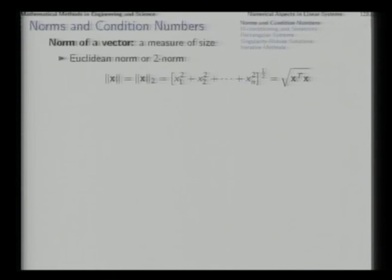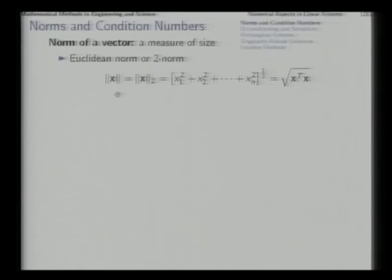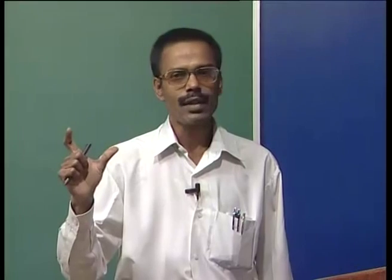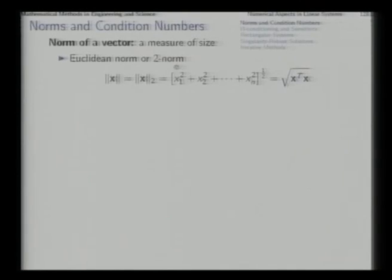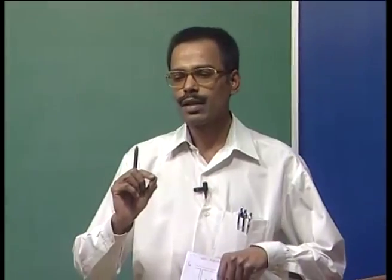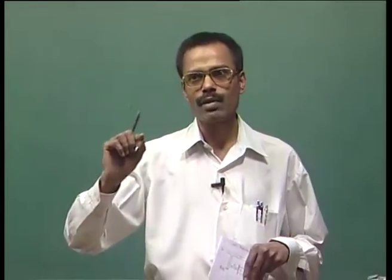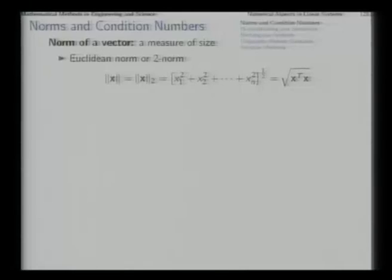The underlying definition: norm means size. When you talk of norm of a vector, we basically talk of a measure of size of the vector. All of you are familiar with the ordinary Euclidean norm or two-norm, which is simply the length of the vector x in the ordinary geometric sense. That is x₁² + x₂² + ... + xₙ² to the power half, meaning square root — the same way you take distance from origin to a point as square root of x² + y² + z². This gives you the ordinary Euclidean norm or two-norm.